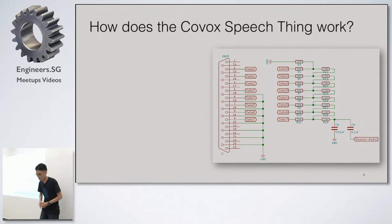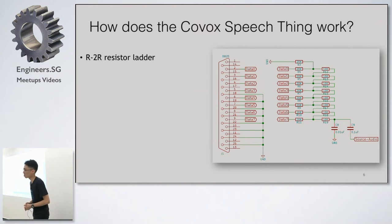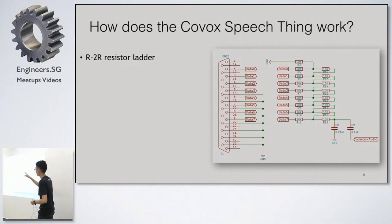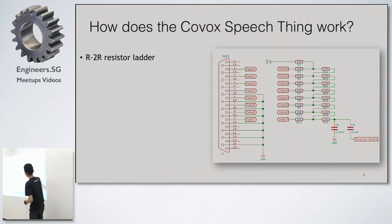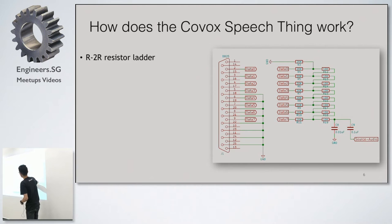So how does the Covox Speech Thing work? It's made up of an R2R resistor ladder. The name R2R comes from the fact that there are two sets of resistors: one set at 10k ohms, and another set at 20k ohms — double the first. That's why it's called an R2R resistor ladder.